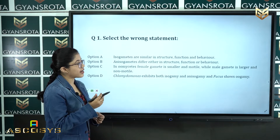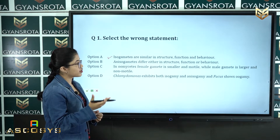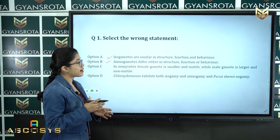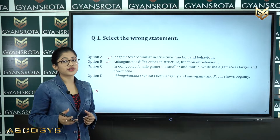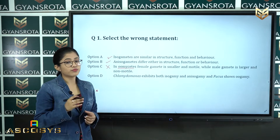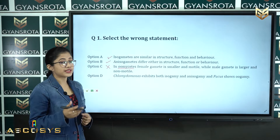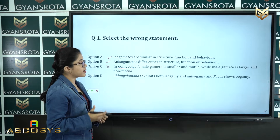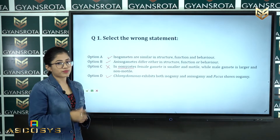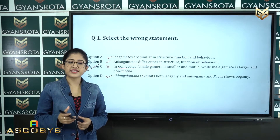Option A — isogametes are similar in structure, function and behavior — is a correct statement. Option B — anisogametes differ in structure, function and behavior — is also correct. In option C, it is written that in oomycetes the female gamete is smaller and motile whereas the male gamete is larger and non-motile. That is the incorrect statement, because in oomycetes the female gamete is larger and non-motile while the male gamete is smaller and motile. Option D — Chlamydomonas exhibits both isogamy and anisogamy, and Fucus shows oogamy — is correct. So option C is the correct answer.